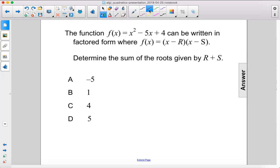Alright, so we have x squared minus 5x plus 4 equals 0. We will factor this.